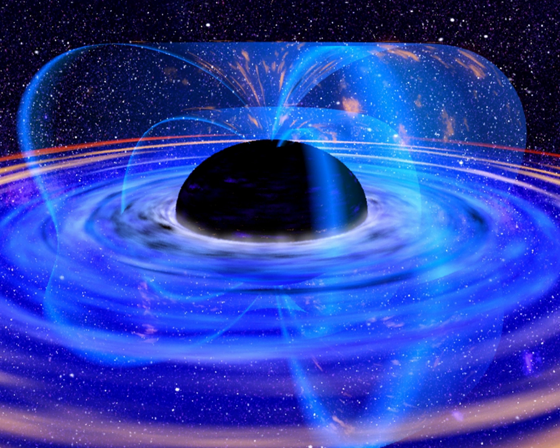Information gradually leaks out during the black hole evaporation. Advantage: intuitively appealing because it qualitatively resembles information recovery in a classical process of burning. Disadvantage: requires a large deviation from classical and semi-classical gravity, which do not allow information to leak out from the black hole, even for macroscopic black holes for which classical and semi-classical approximations are expected to be good approximations.